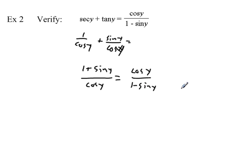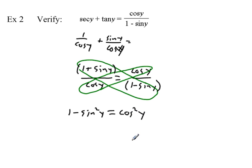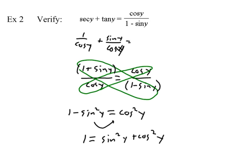We have two fractions set equal to each other, so we can cross multiply. Using the distributive property we get one minus sine of y plus sine of y, which cancels, giving one minus sine squared of y equals cosine squared of y. Rearranging gives us our Pythagorean identity: one equals sine squared of y plus cosine squared of y. We've verified these two expressions are equal.